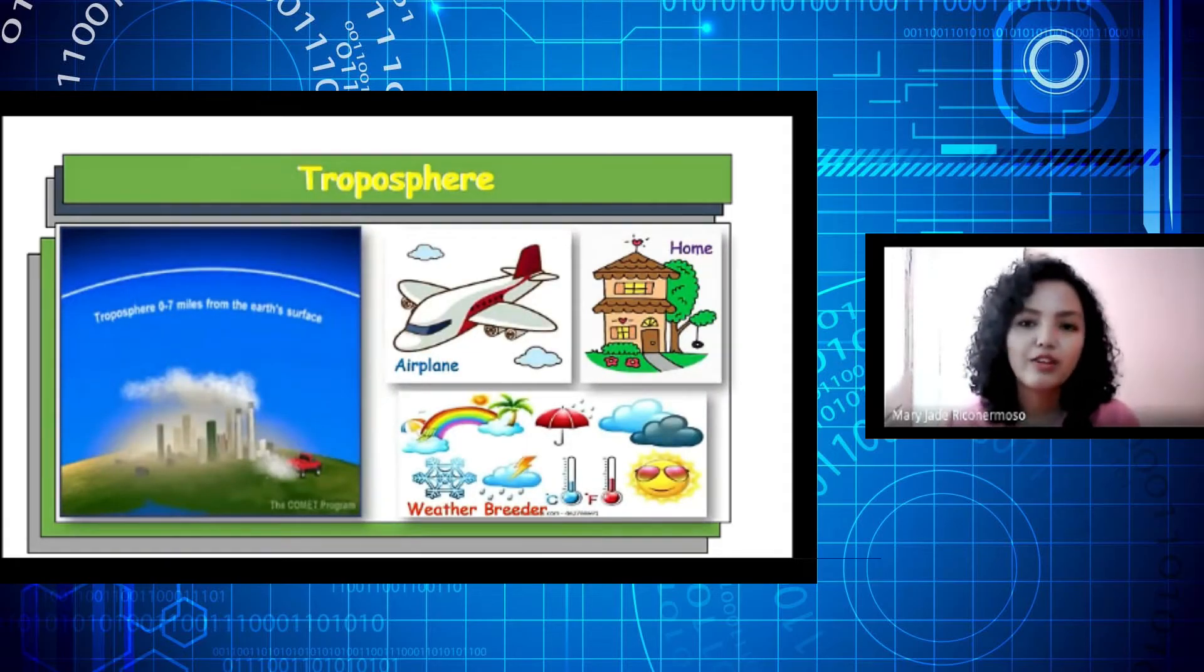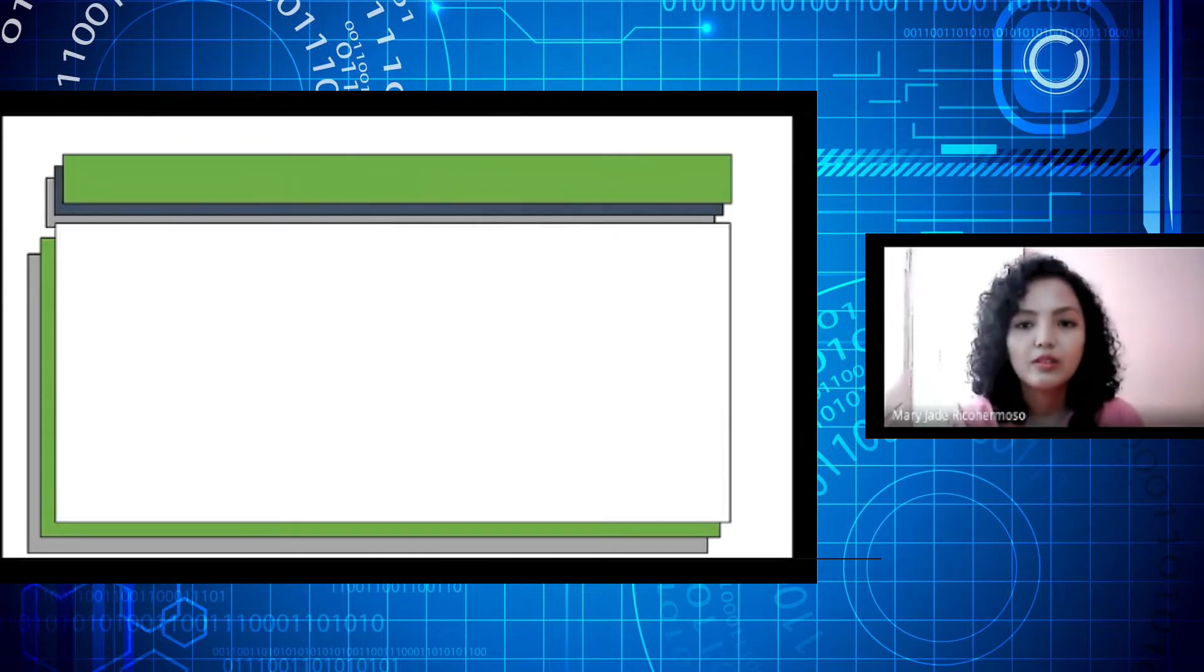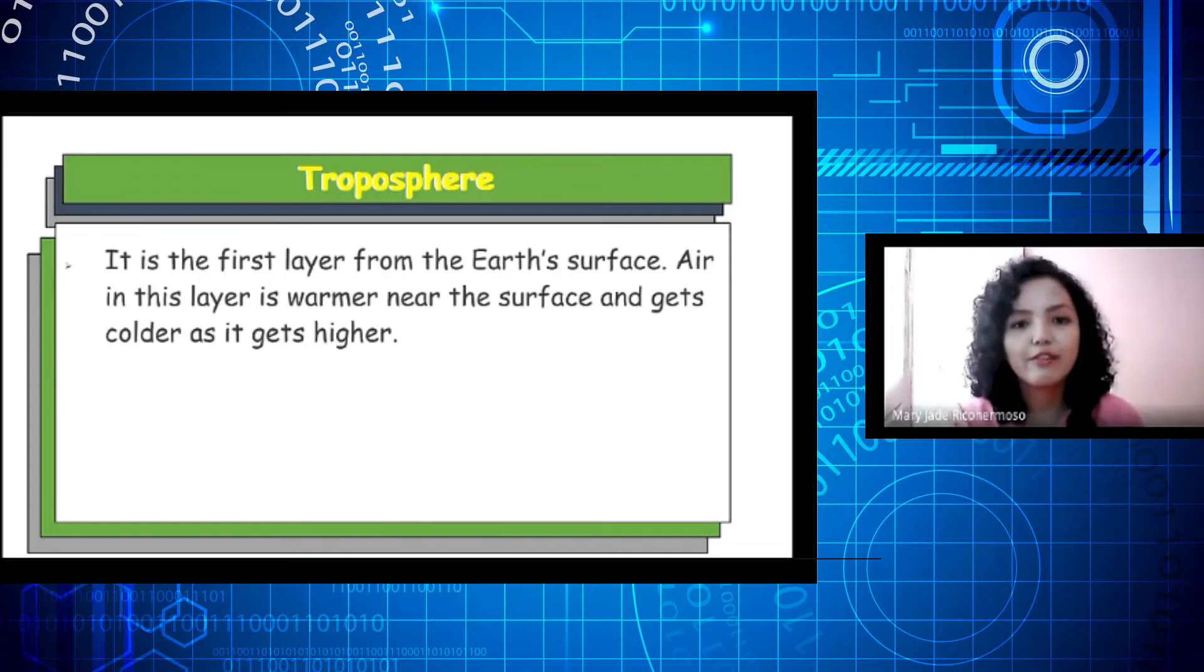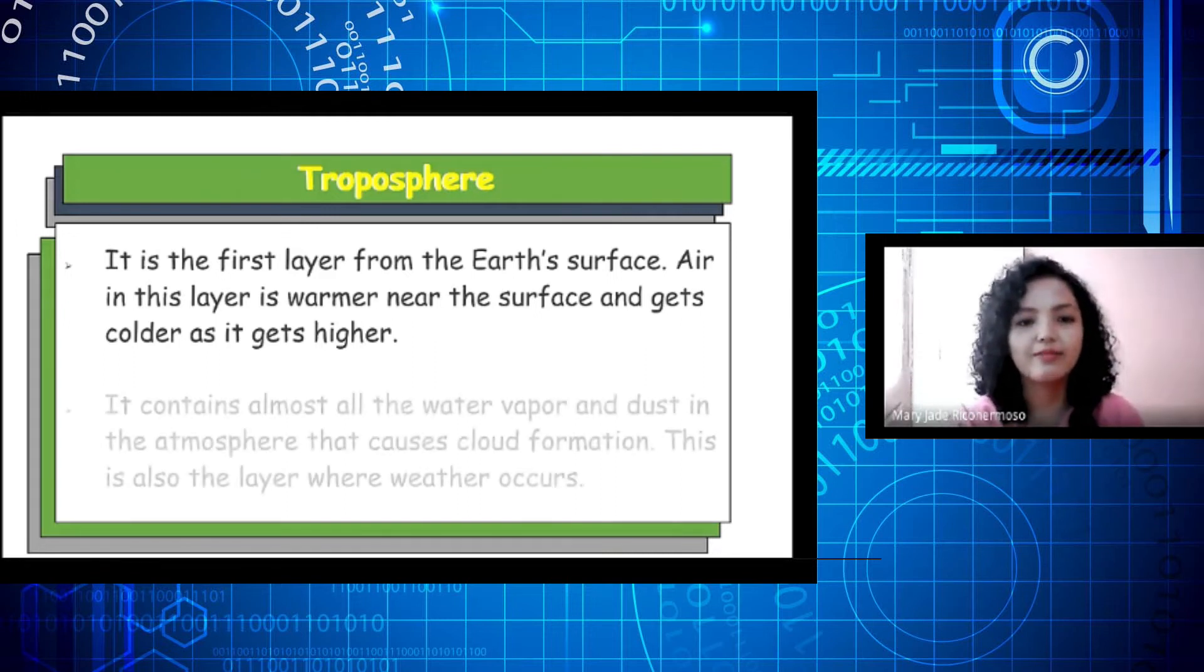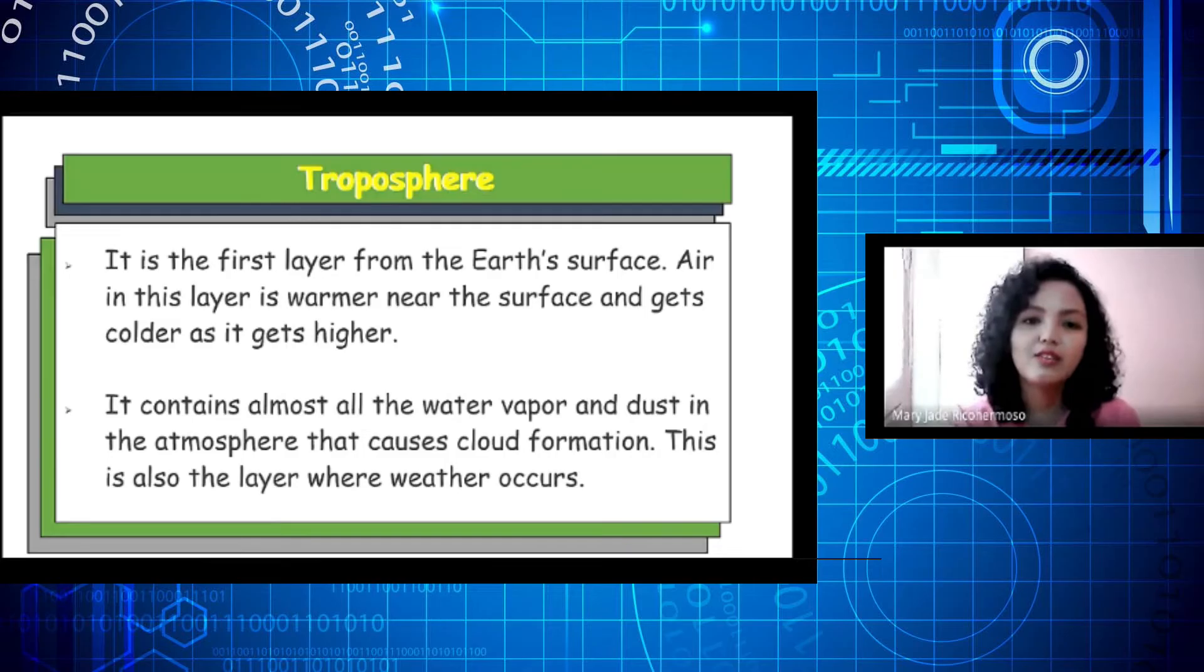Here are the objects or materials that you can find in the first layer, which is the troposphere. It is where we live in. This layer has the air we breathe and the clouds in the sky. Troposphere is the first layer from Earth's surface. Air in this layer is warmer near the surface and gets colder as it gets higher. It contains almost all the water vapor and dust in the atmosphere that causes cloud formation. This is also the layer where weather occurs.